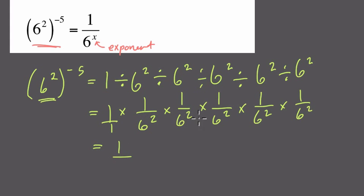We have 6 squared times 6 squared times 6 squared times 6 squared. So that's 2, 4, 6, 8, 10. So that is 6 to the 10th. We can add those exponents because we're multiplying equal bases. So here, we can see that x is equal to 10.